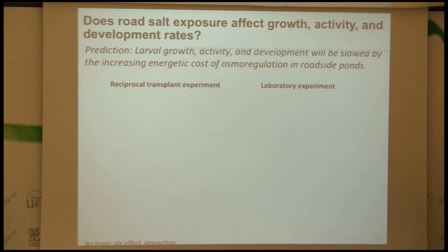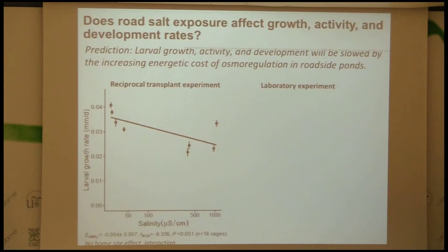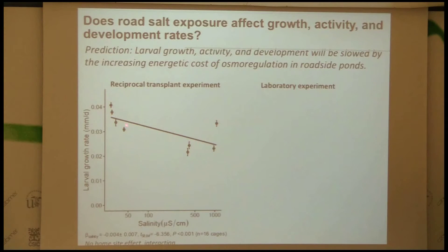We were looking at effects on later life history stages in wood frogs, with the prediction that larval growth activity and development would be slowed with the increasing energetic cost of osmoregulation. We've done reciprocal transplant experiments, taking populations from woodlands and roadsides and swapping them, and comparing their growth in their own ponds. We don't see evidence of local adaptation — tadpoles laid in salty ponds don't survive any better. In general, we see a lower growth rate and a trend toward slower development in saltier ponds.